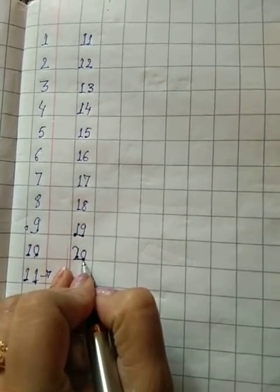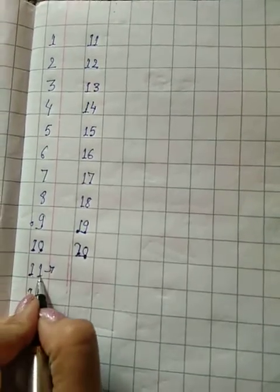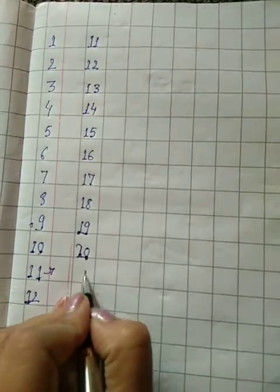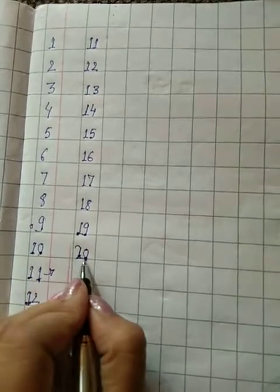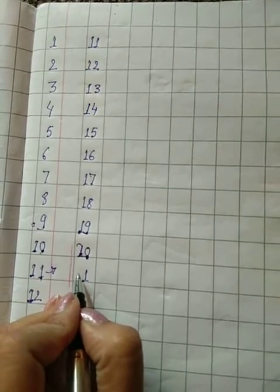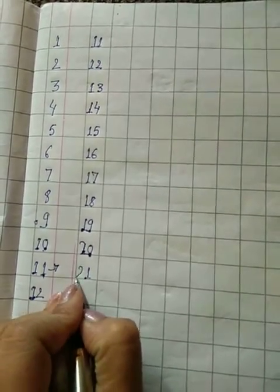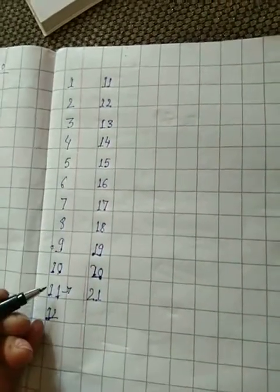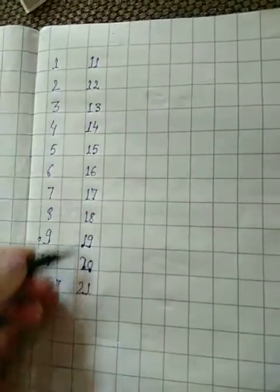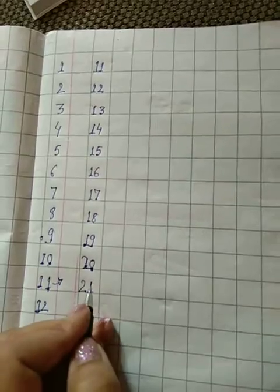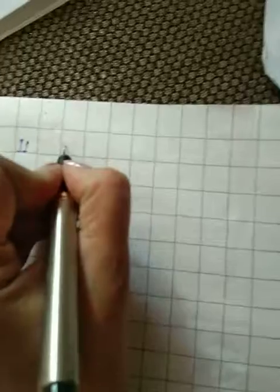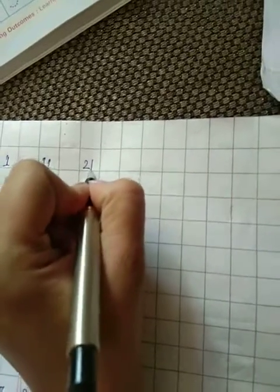20 ke baad kya aayega? 0 ke baad, jaise yahaan par 0 ke baad 1 aaya tha. Aur 2 ke baad kya aayega? Yahi 2 repeat hoga. Jaise ki yahaan par 0, 0 gaya tha, yahaan par 1, 1, 1 gaya tha. Ab hamara 2, 2, 2 chalega. So we write 2, 1, 21.